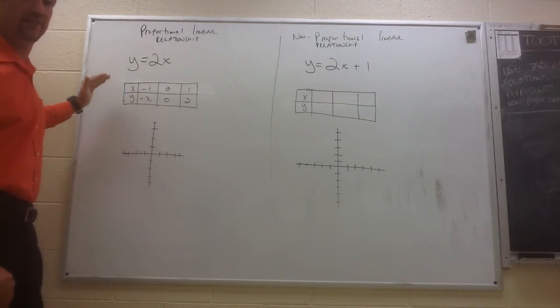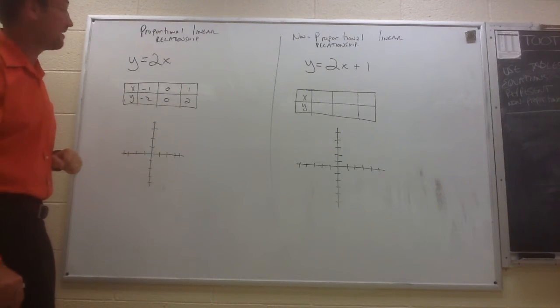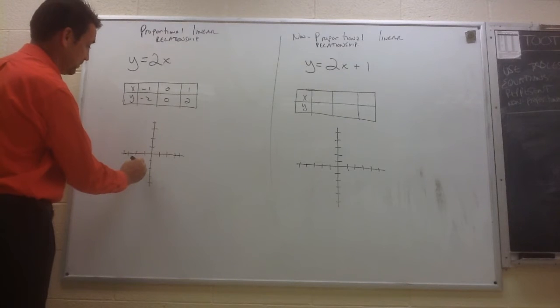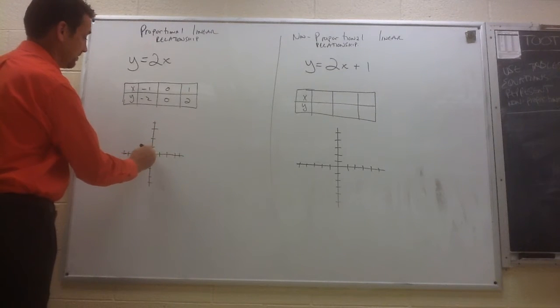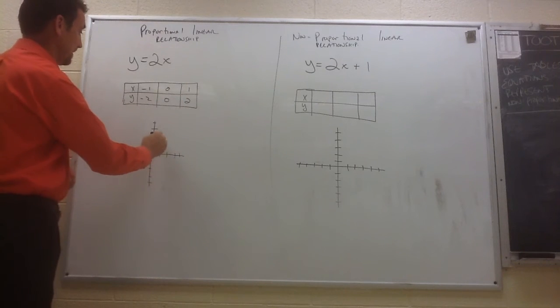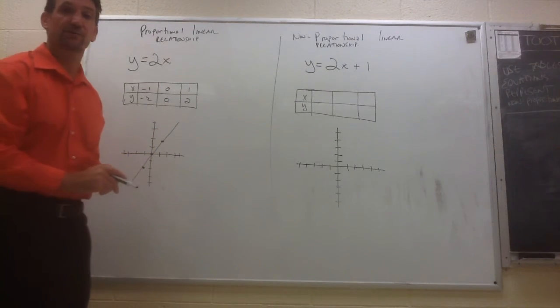If I were to then take the information in this table and plot it on the coordinate plane, make a graph. When x is negative 1, y is negative 2. When x is 0, y is 0. We said that would pass through the origin. And when x is 1, y is 2. And you notice our graph is a straight line that passes through the origin.